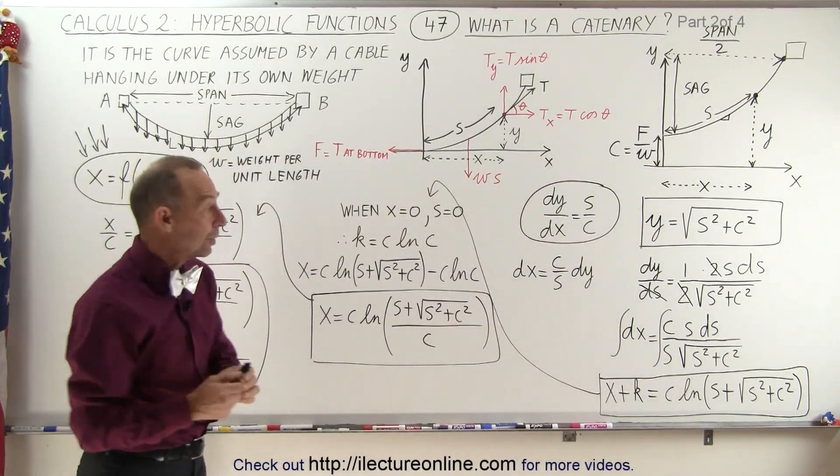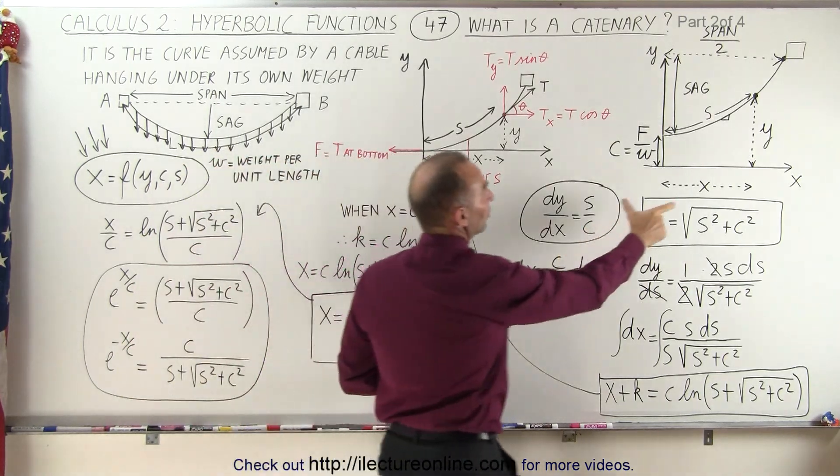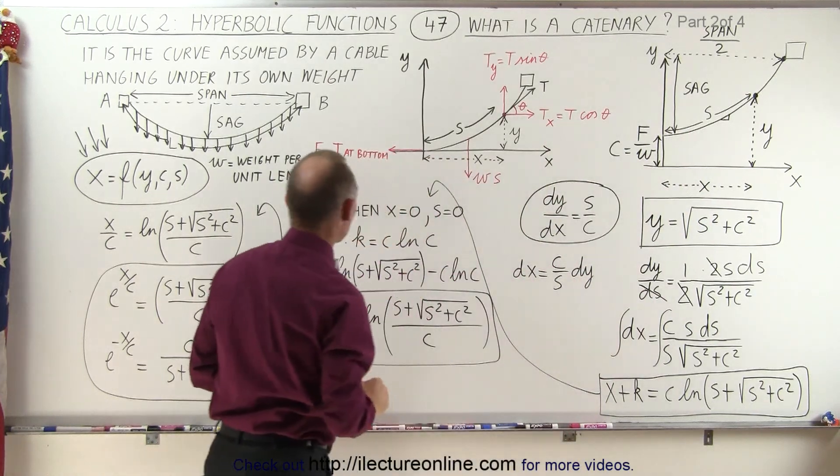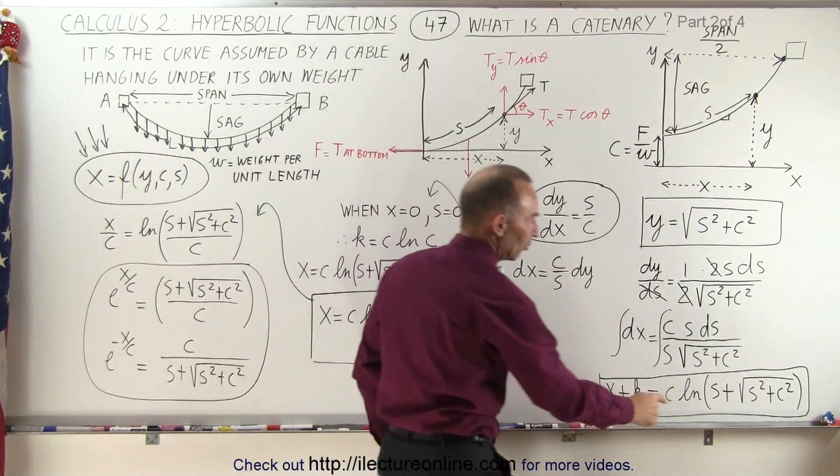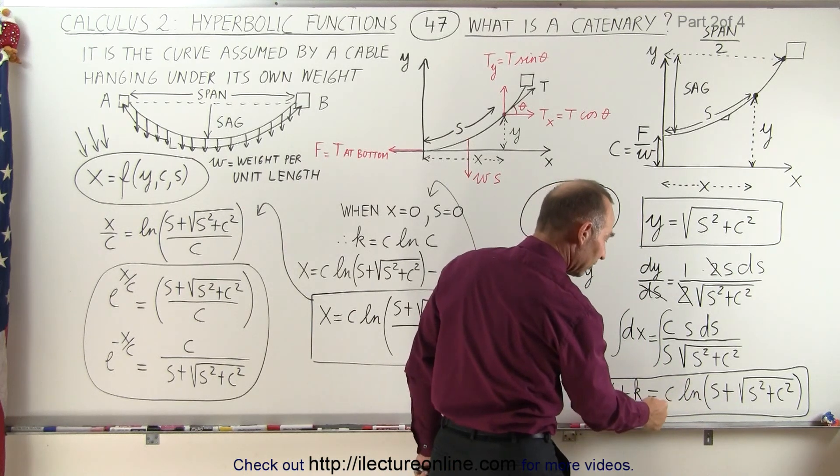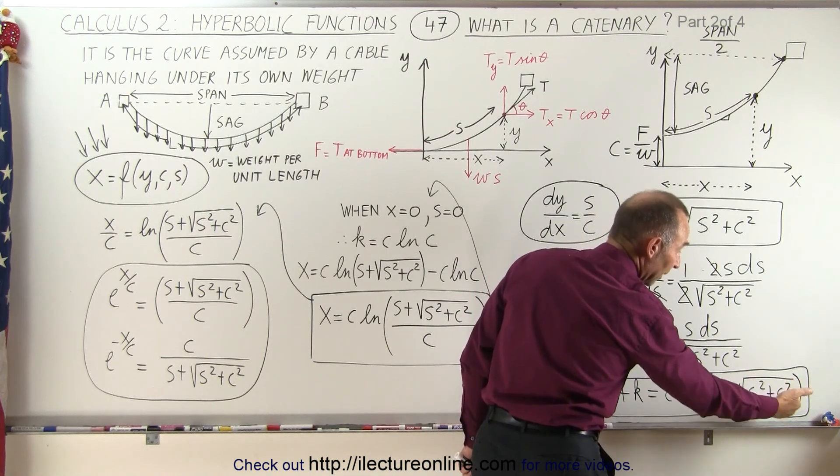So now let's take that equation, bring it up here. Now we're going to realize that when x is equal to zero, s must be equal to zero as well. So if we do that, if we plug in zero for s and zero for x, then we get k is equal to c times the natural log of the square root of c squared, which is basically c.